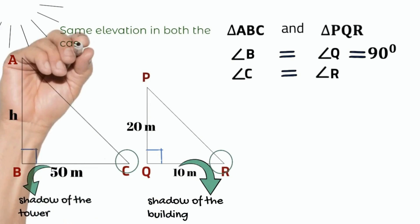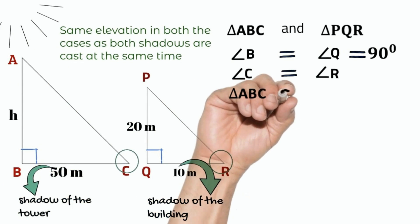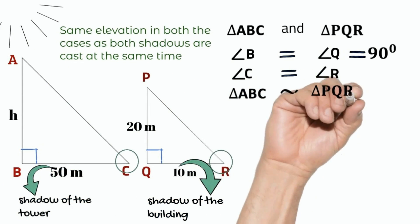Therefore, triangle ABC is similar to triangle PQR by angle-angle similarity.